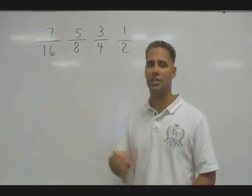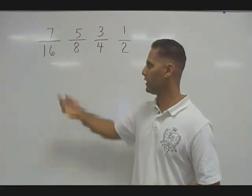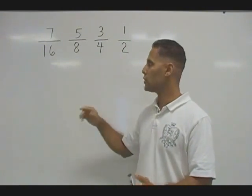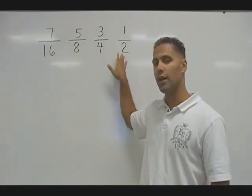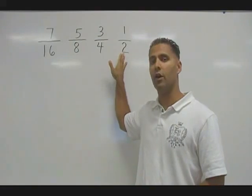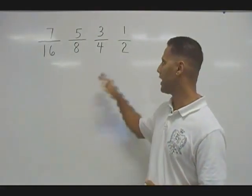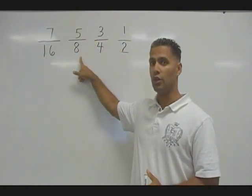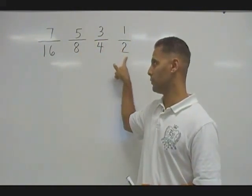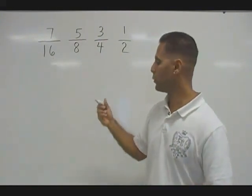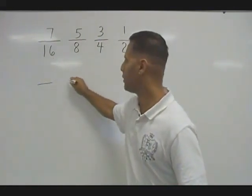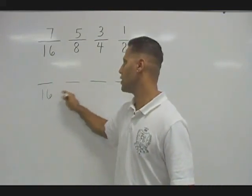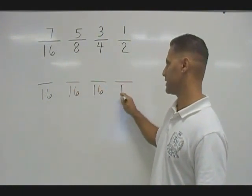That would be like comparing inches to miles or feet to centimeters. So what we're going to do is make sure that all of our units or denominators are in the same units. We're going to take 16, 8, 4, and 2 and find the lowest common denominator of all four. If you count multiples of two, four, and eight, you would notice that all three of these numbers would hit 16. So the least common multiple or lowest common denominator of the four denominators is 16.